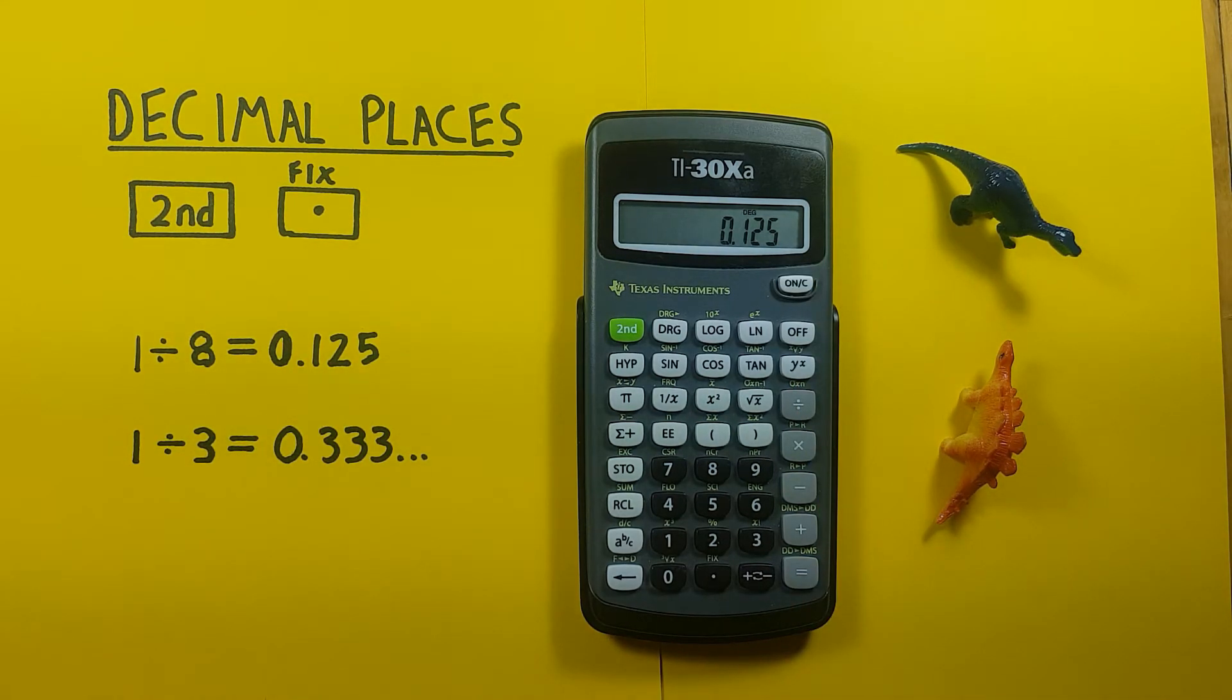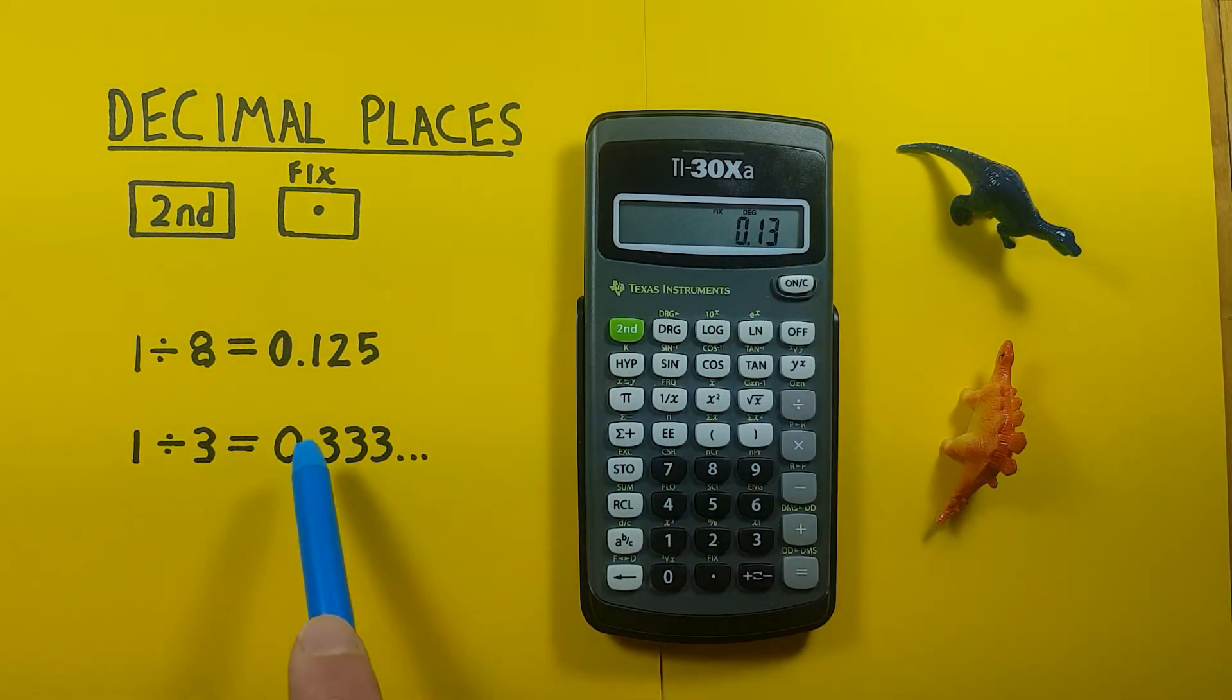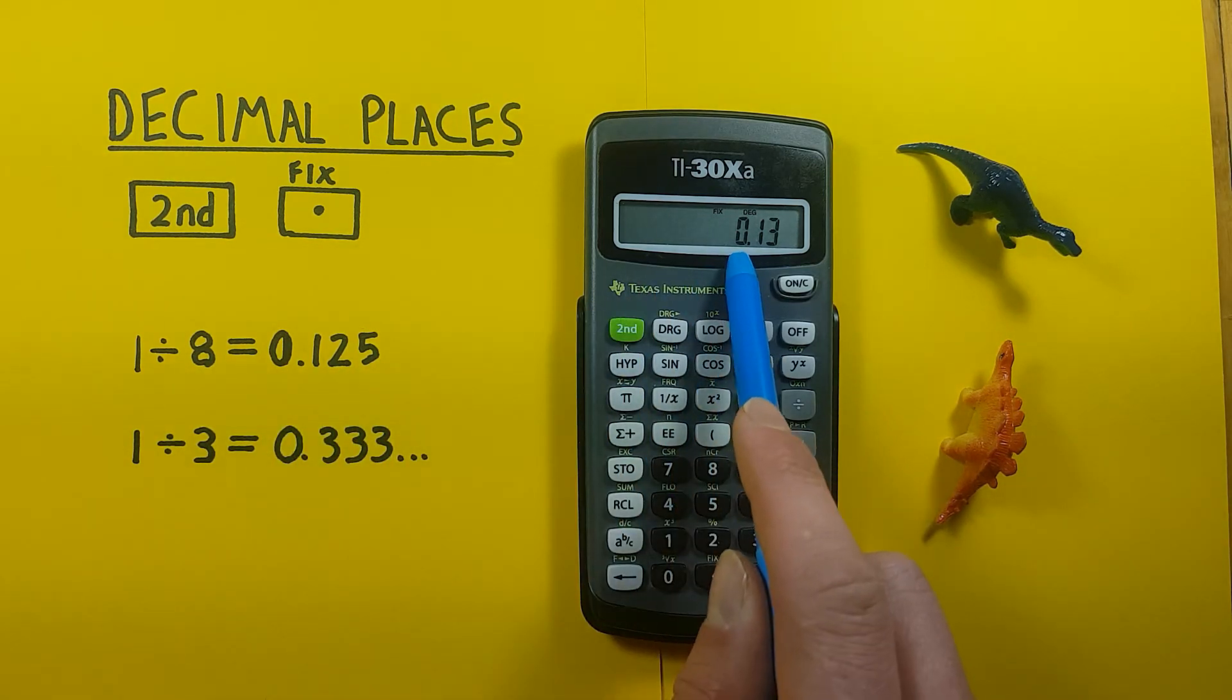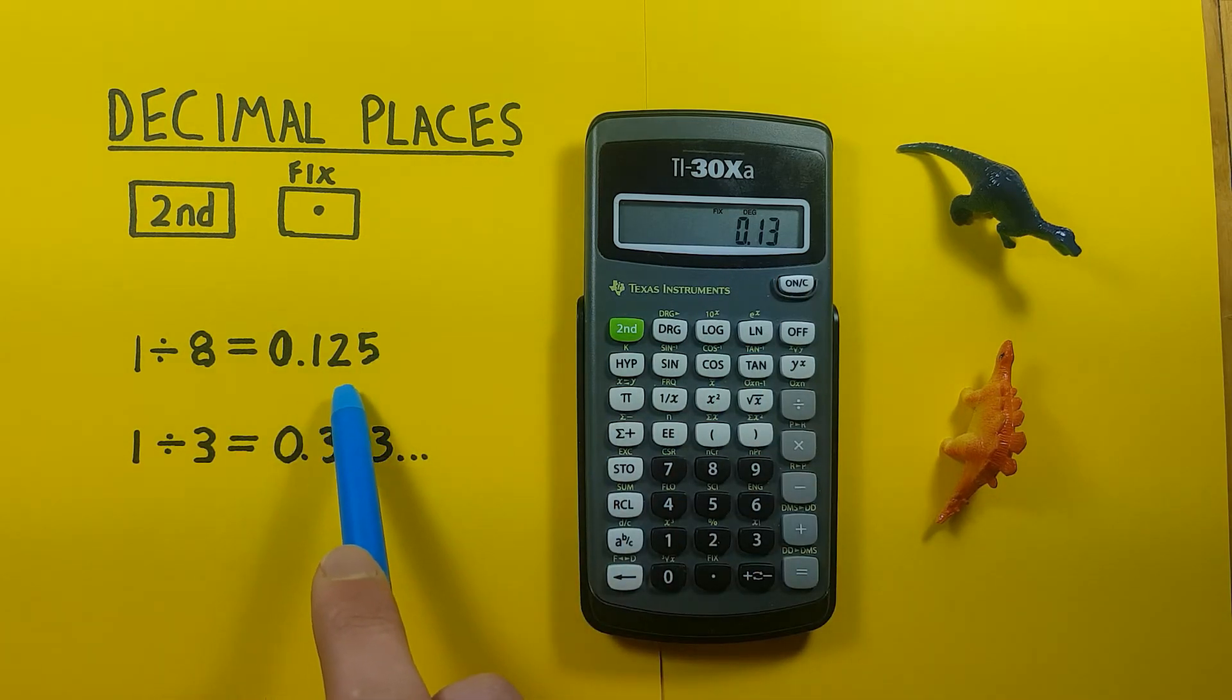But if we want to change the number of decimals we get, we can do that by pressing second, then the fix key or the decimal, and then choosing the number of decimals we want. So if we want two decimal places we press 2. Our answer has changed to two decimal places and what was 0.125 has rounded up to 0.13 because that 5 has rounded up.